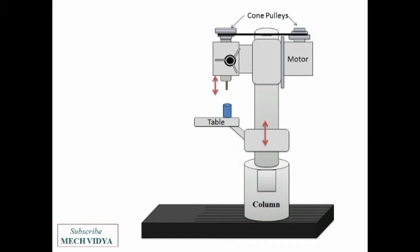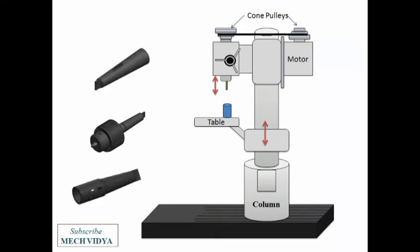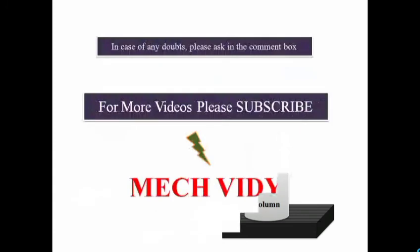The drill bit can be mounted in the spindle or can be mounted with the help of a chuck socket or sleeves. So this was all about the different aspects of the drilling machine.